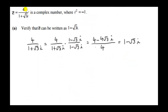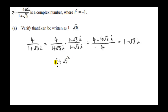Here we have two complex numbers: 4 (or 4 plus 0i) over 1 plus root 3i. We want to write it as the single complex number 1 minus root 3i. We multiply above and below by the conjugate of the denominator, which is 1 minus root 3i. When we multiply the denominators together, we get a real number — the square of the magnitude — equal to 1 squared plus root 3 squared, which is 1 plus 3 equals 4. We divide each term on top by 4, giving us 1 minus root 3i.